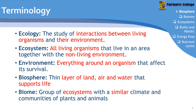The ecosystem is the whole area, looking at all of the living things and non-living things in an area. The environment is similar to the ecosystem but focuses on an individual organism or a group of organisms and everything around it that affects its survival. Ecosystem and environment are sometimes used interchangeably, but that is actually incorrect. The biosphere is a thin layer of land, air, and water that supports life. Biomes are groups of ecosystems with a similar climate and communities of plants and animals.